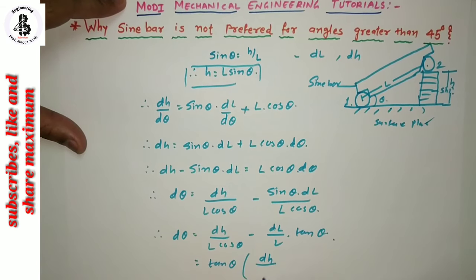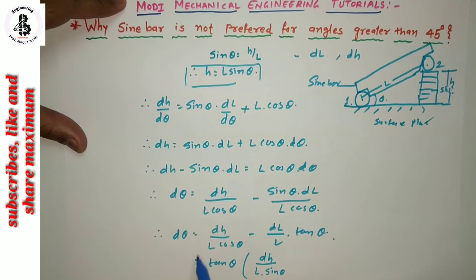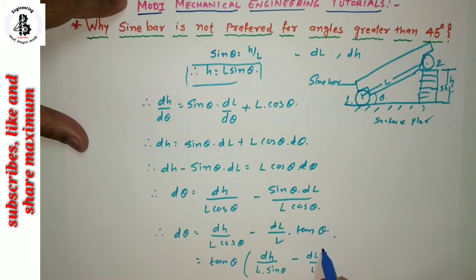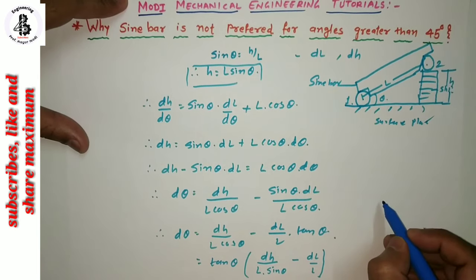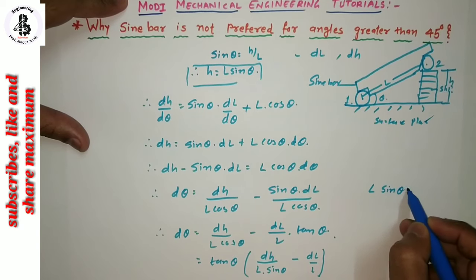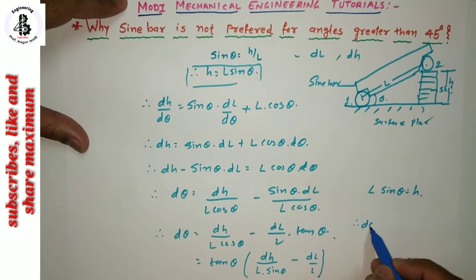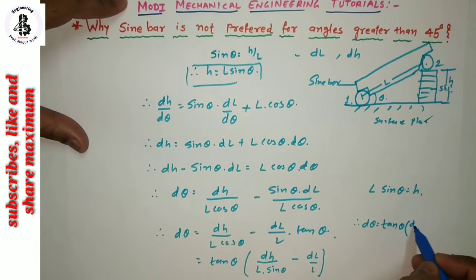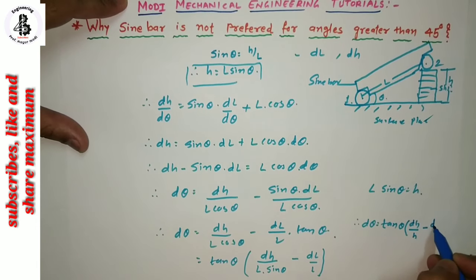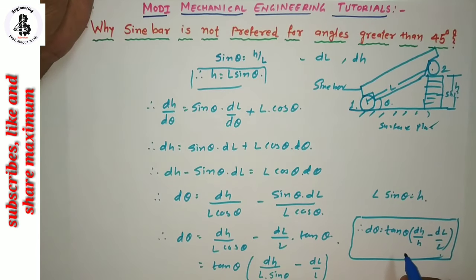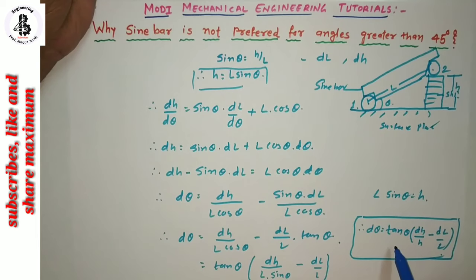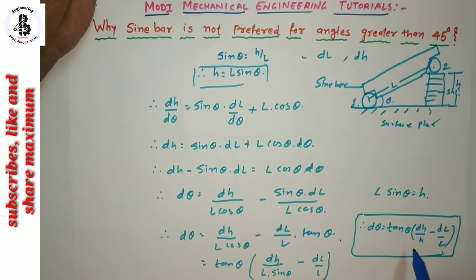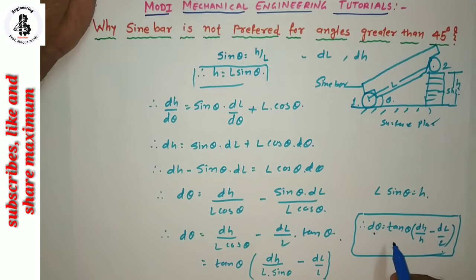Since L sine theta equals H, d theta equals tan theta into dH upon H minus dL upon L. From this equation it can be seen that the effect of errors in either the spacing of the rollers or the height of the slip gauge combination H is a function of the tangent of the angle theta. The maximum error occurs when the errors in H and L are of opposite signs.